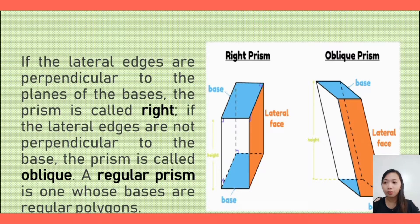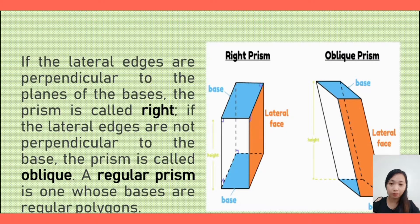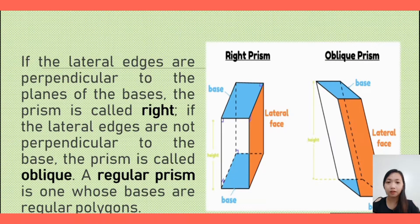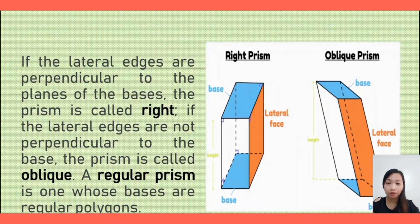When the bases are regular polygons — such as a square, rectangle, heptagon, or hexagon — those are called regular prisms.